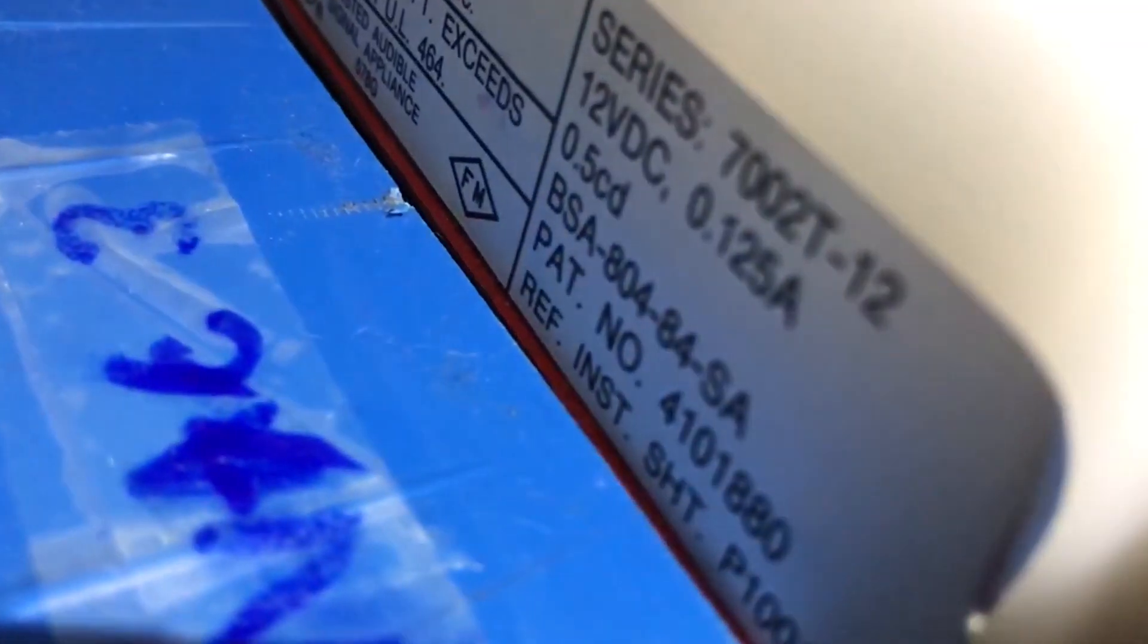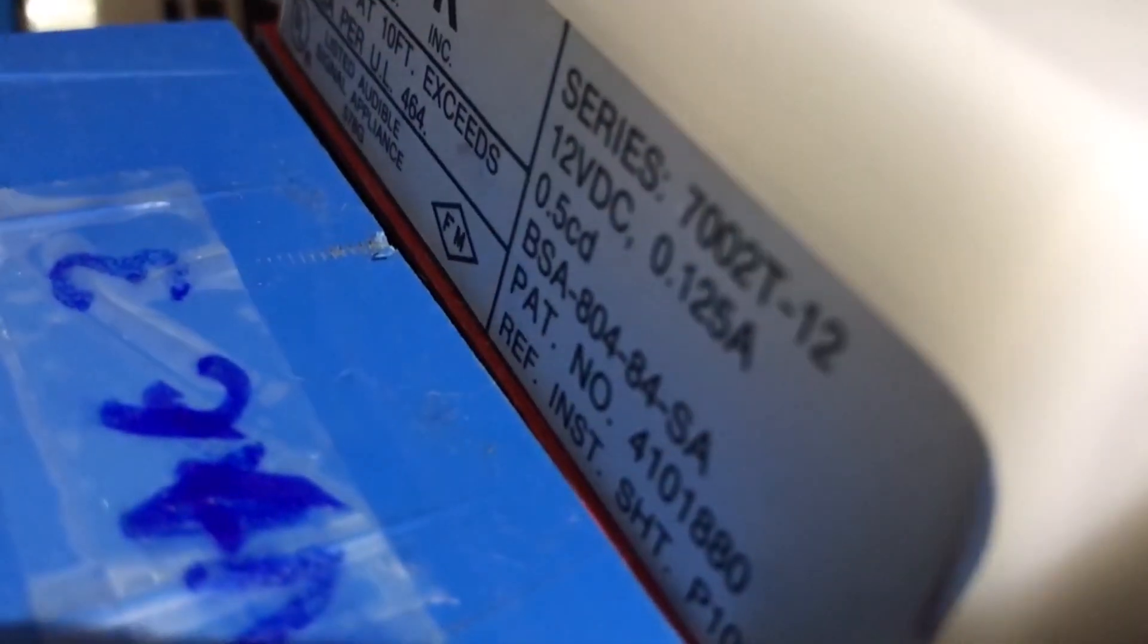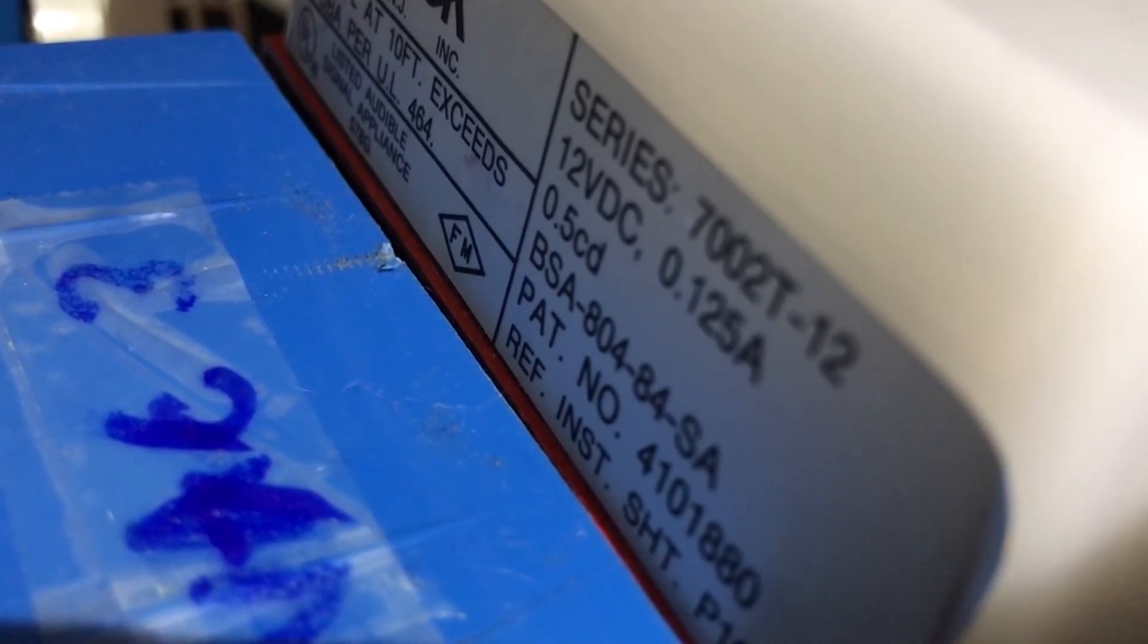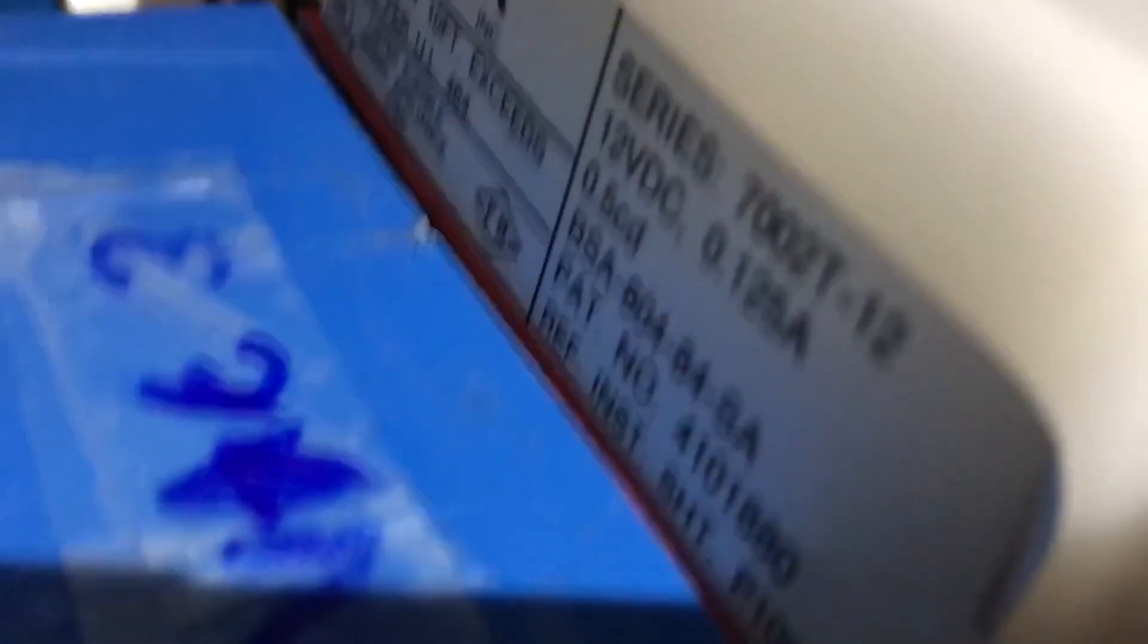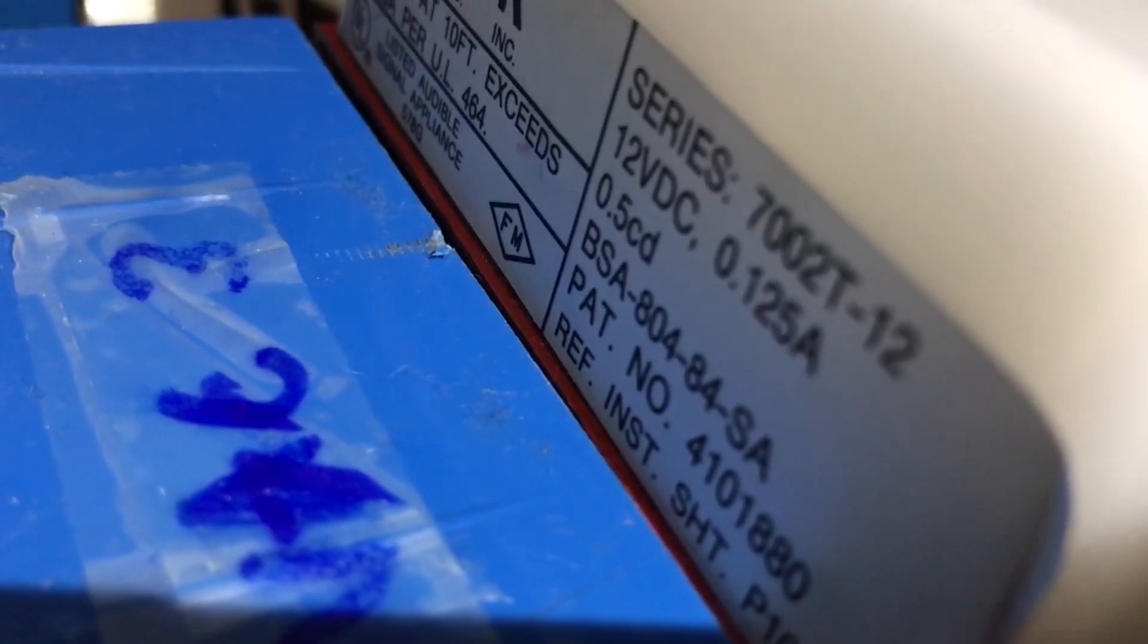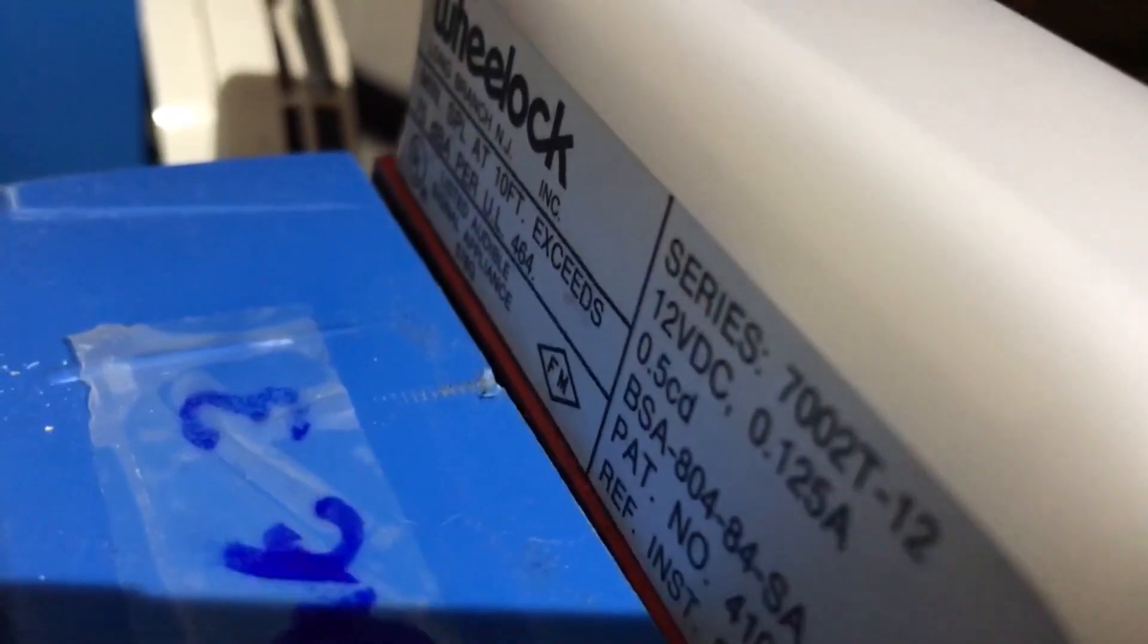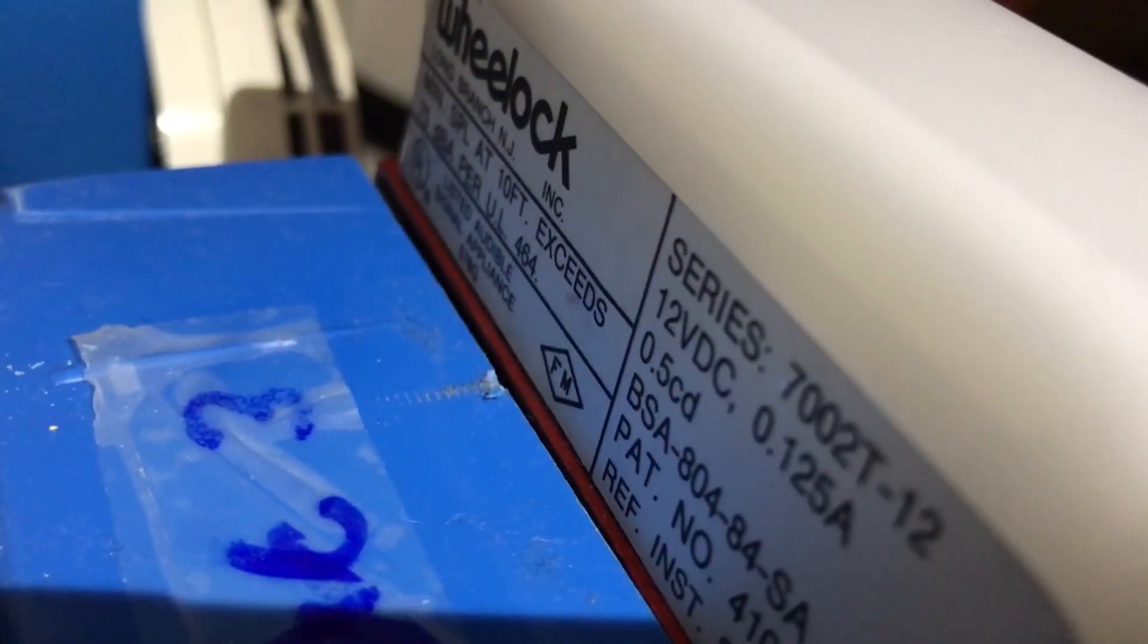What I'm trying to show you guys is the back of the device, since it's in a tight spot right here. This is Nat 3. I have a flashlight right here so you can see. Series 7002T-12, 12V device, 0.125 amps, 0.5 candela. So this is very dim.